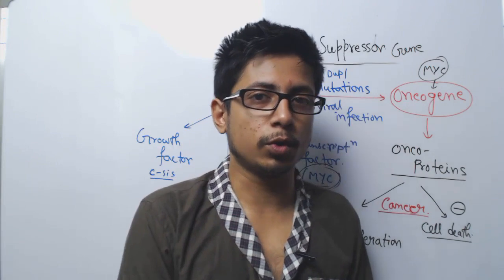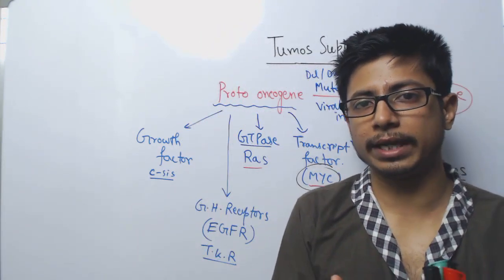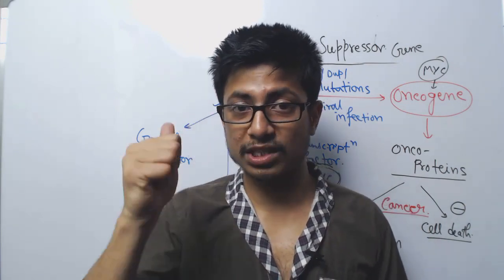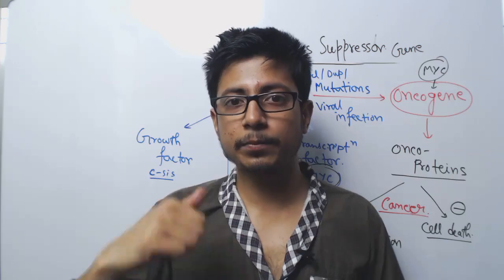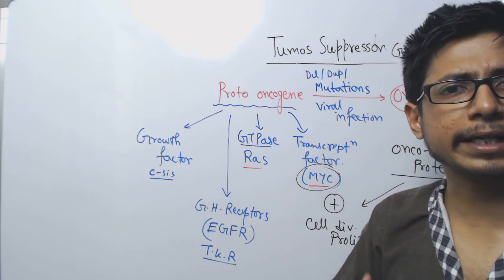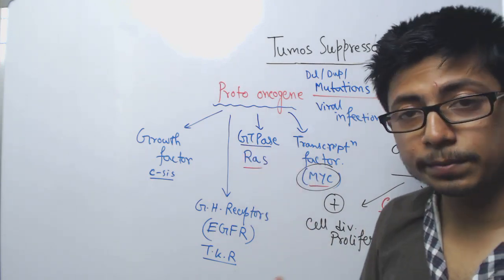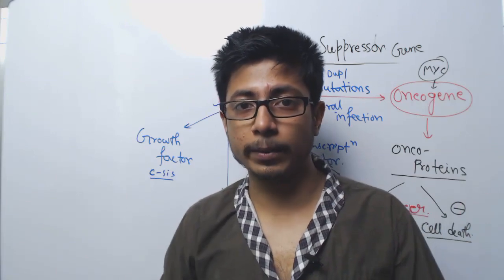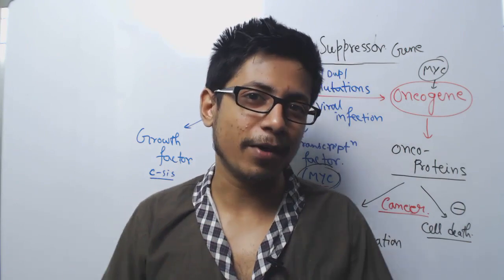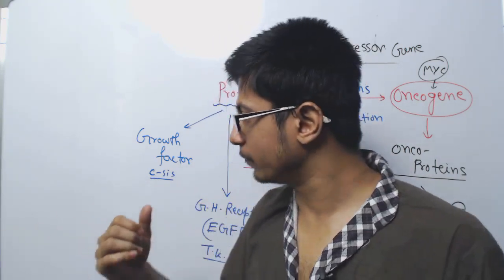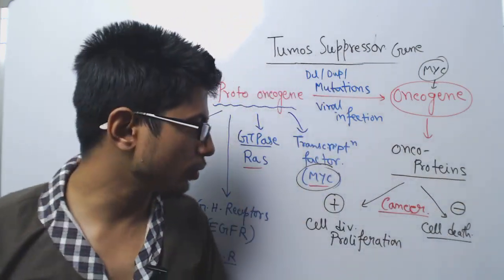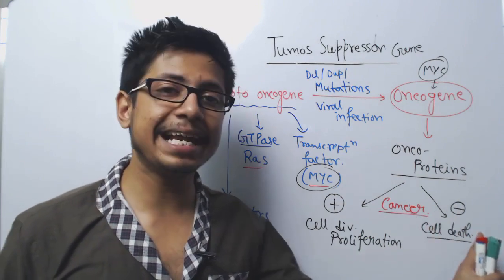Besides proto-oncogenes, there are two different pathways in our body always going on. One pathway promotes life, involving growth factors, growth factor receptors, signaling mediators, and transcription factors that ensure the cell will grow and divide. There are also other pathways known as apoptosis or cell death pathways.